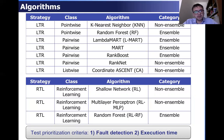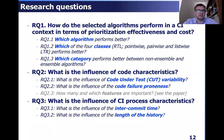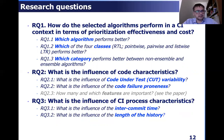The test prioritization criteria that we use are fault detection and test execution time. So the output is the ranked test list, which is expected to detect more faults and to have shorter test execution times. The research questions we target are three: how do the selected algorithms perform, what is the influence of the code under test, and what is the influence of the continuous integration process characteristics?